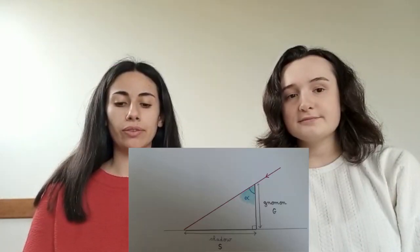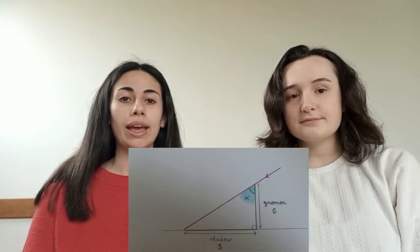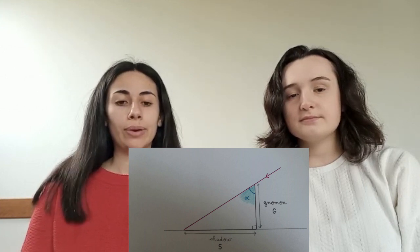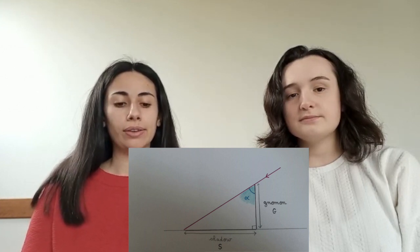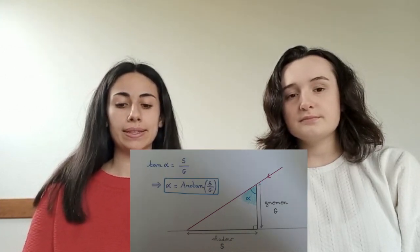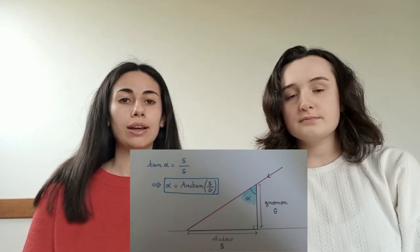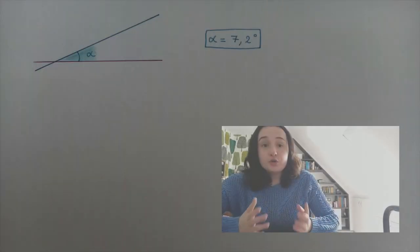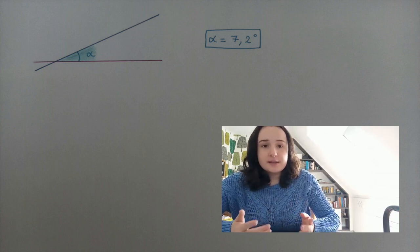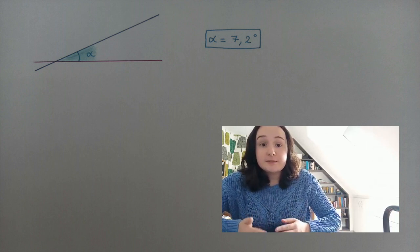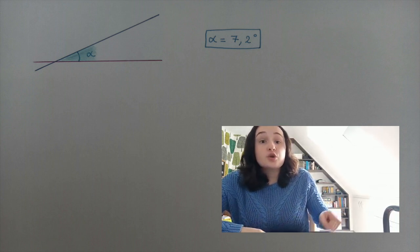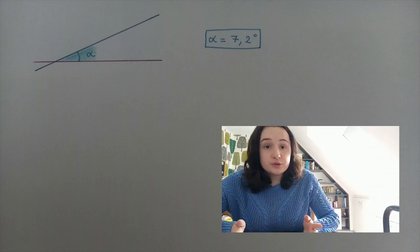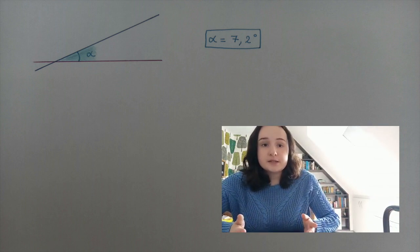By measuring the shadow of the gnomon and knowing the height of the gnomon, Eratosthenes can calculate the angle that the sun's rays make with the vertical through trigonometry. A new question then arises: how many times can this angle be copied to make a complete tour of the Earth? As it measured about 7.2 degrees, the answer is 50 times.